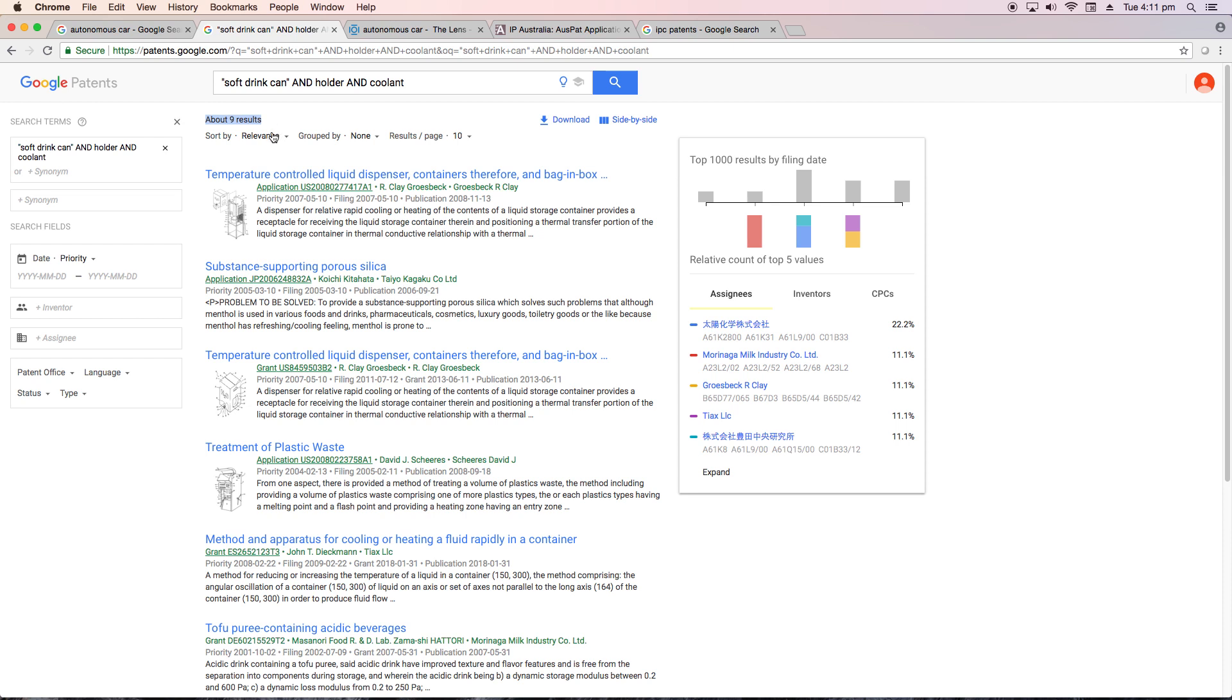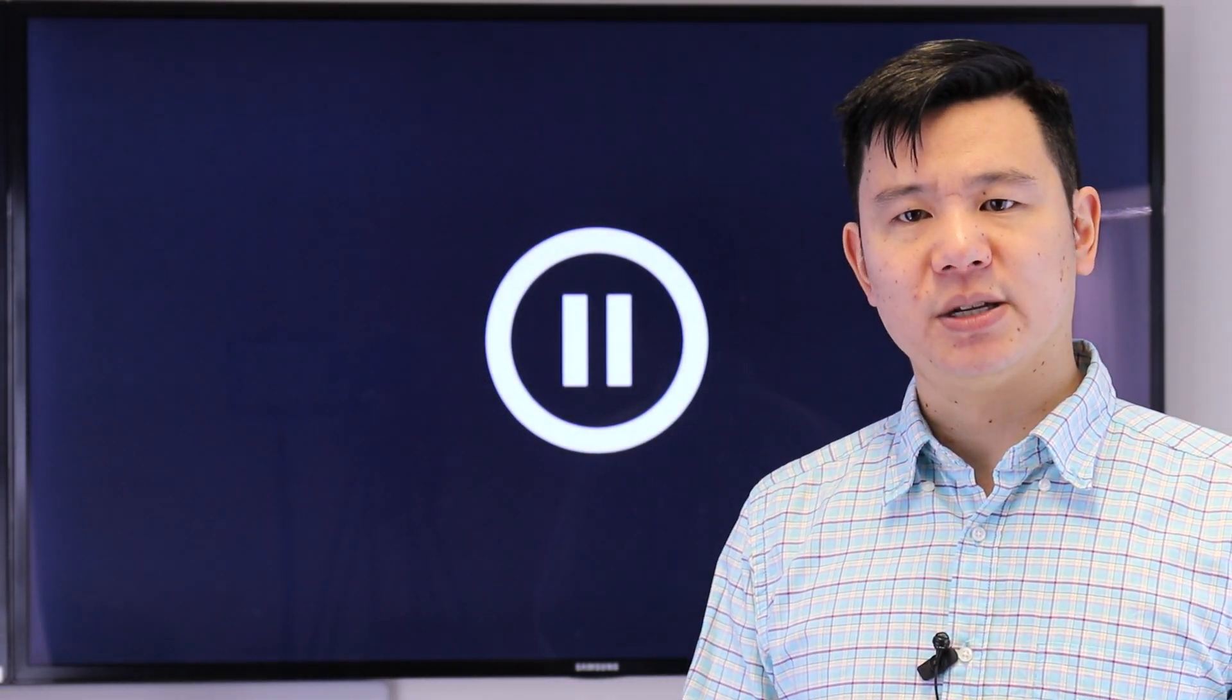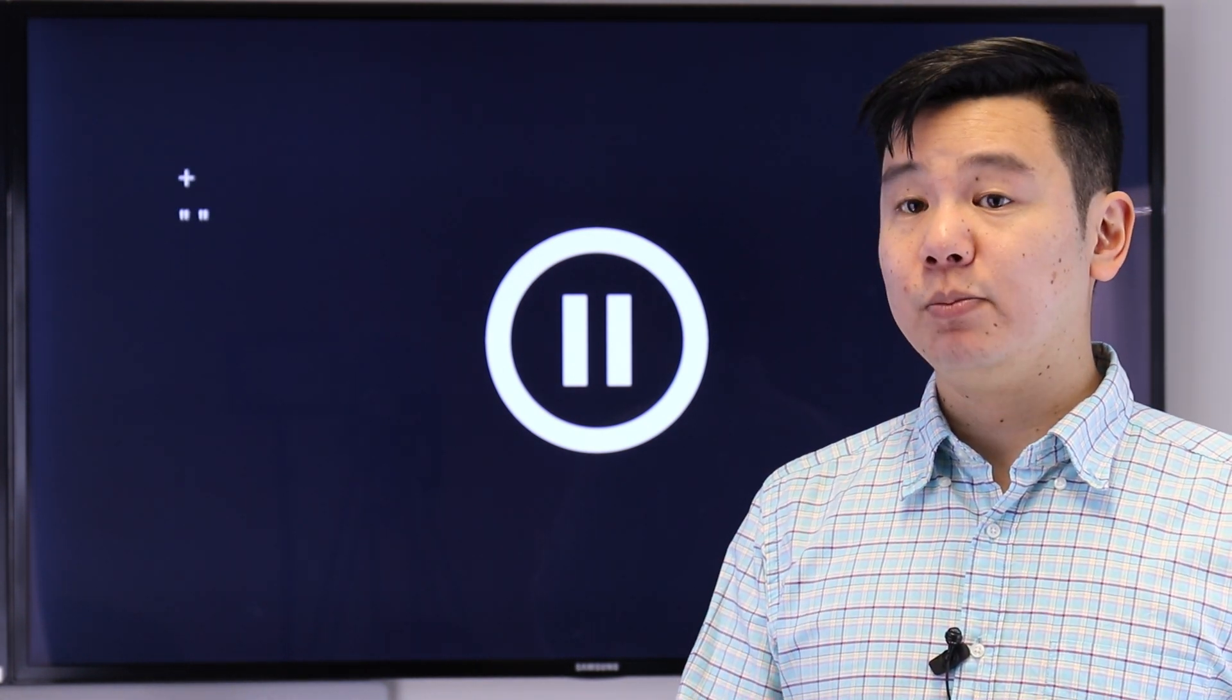Remembering what we said earlier about using synonyms, let's try a few alternatives and see what happens. Let's try beverage, container, coolant, as well as sleeve, holder or pocket. Now you can see we've got plenty more results because we've used a broader set of words. Now, I just want to pause there and talk about the mechanics of what I just typed. You'll notice that I used some plus, quotation marks, OR and bracket operators. These have special meanings when you're using Google. I won't go into all of them now, but there's a link in the description below to a useful Google help page.